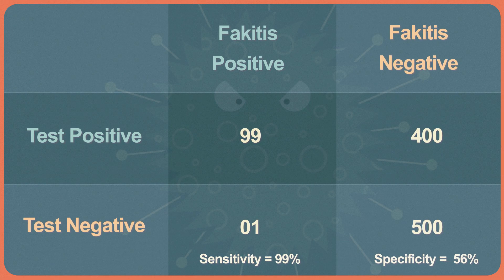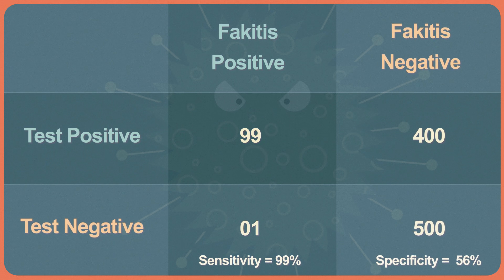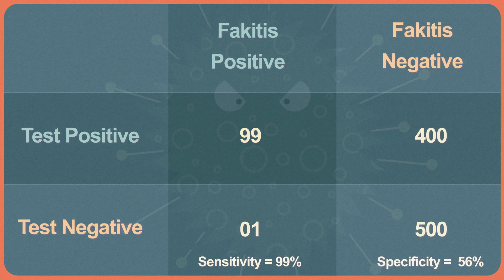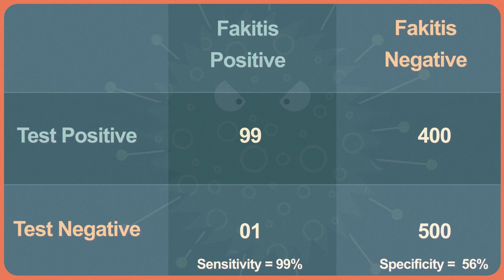Is that good? Well, it depends what you want to get out of the test. Let's say fake-itis is a really bad disease for which we have a treatment that's pretty easy to tolerate. If that's the case, we'd much rather make sure we don't miss any real cases. We want to minimize the number of false negatives, so we could drop the threshold of the white blood cell count to perhaps 12 instead of 15. That might change the results so that our sensitivity is 99 over 100, or 99%, but our specificity is 500 over 900, or 56%.